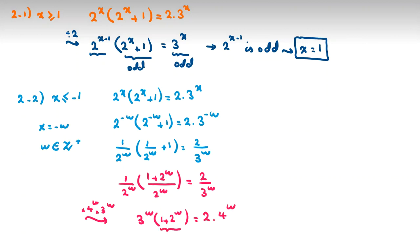Now here, 1 plus 2 to the w is odd because w is positive integer. It is also odd, but this part is even. Odd times odd is odd, not even. So contradiction. And our only answer is x equal to 1.